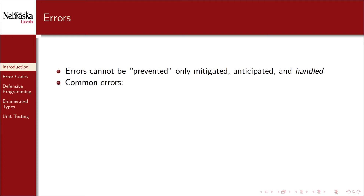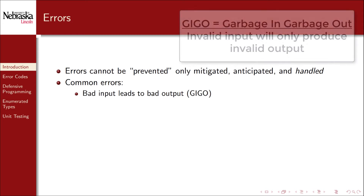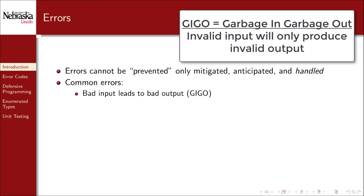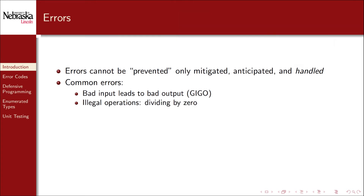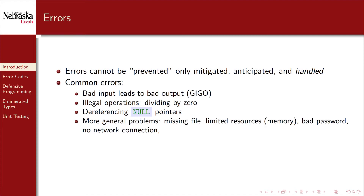For example, some common errors that we've already seen include bad inputs that lead to incorrect outputs — this is often referred to as GIGO, or garbage in, garbage out. Other errors arise from illegal operations, such as dividing by zero or dereferencing a null pointer, or more generally mishandling pointers and other memory. Other general problems a program may encounter include missing files, limited resources such as memory, bad passwords, no network connection, etc.